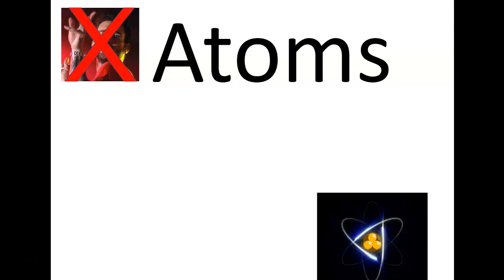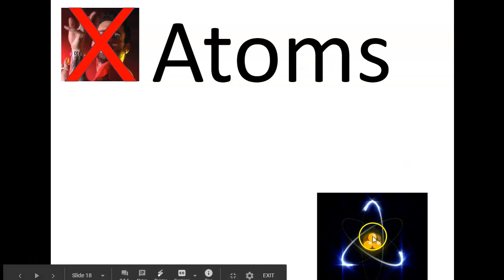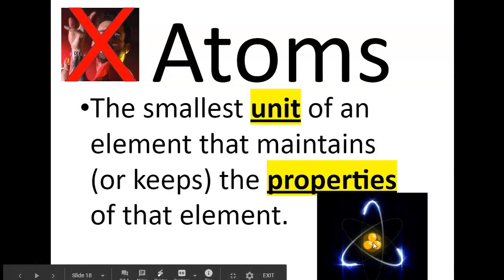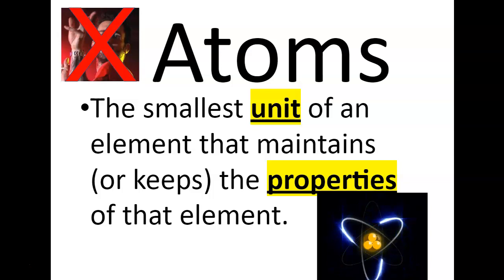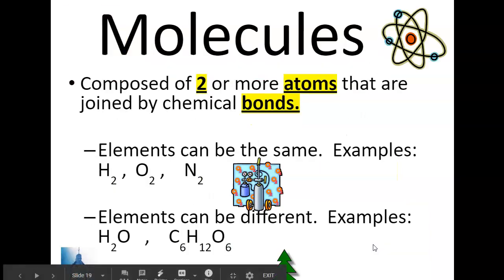That is basically how an atom is structured. It has a nucleus with protons in the center and neutrons in the center. And surrounding and basically orbiting every atom are a certain amount of electrons. And every element has a different amount of protons, neutrons, and electrons circling around it. The bigger the element, the heavier the element, the more protons, neutrons, and electrons it has. Atoms are the smallest unit of an element that maintains or keeps the properties of that element.